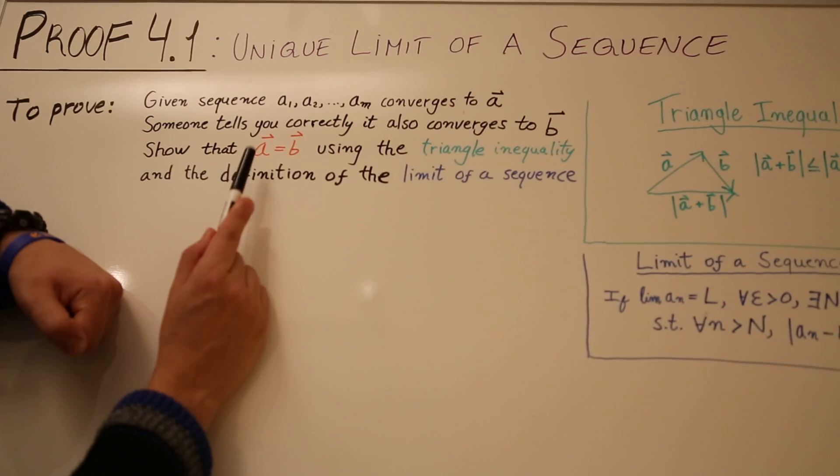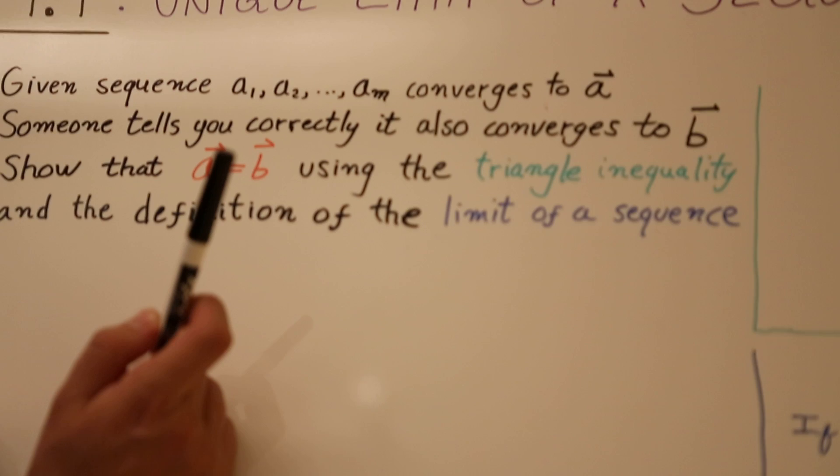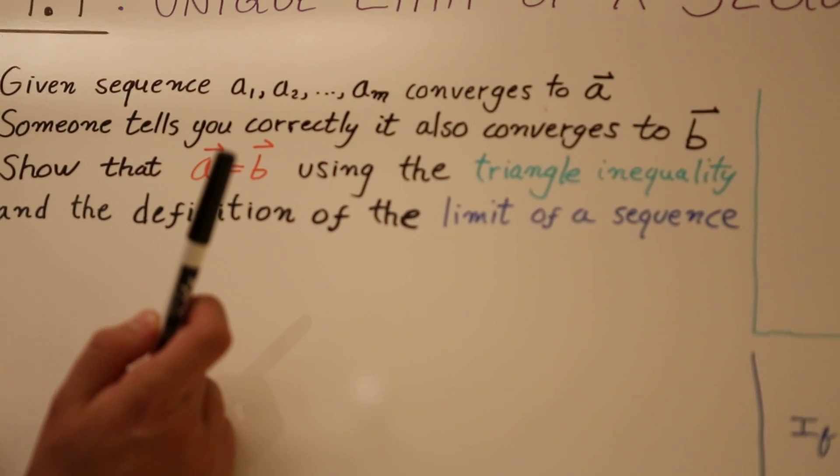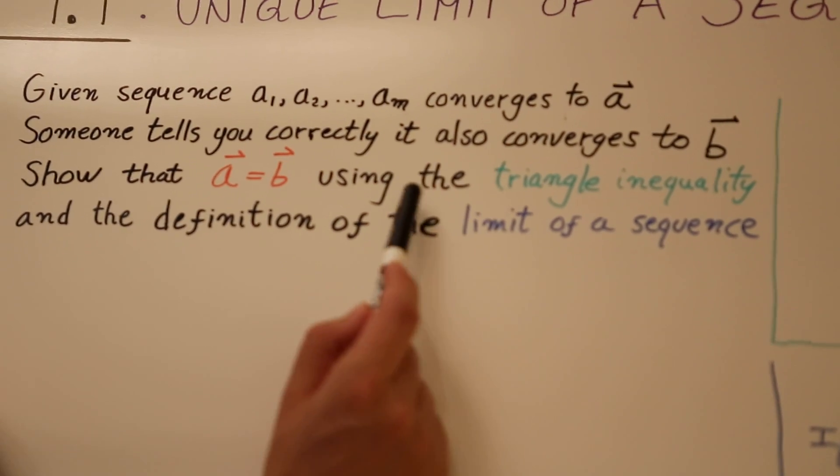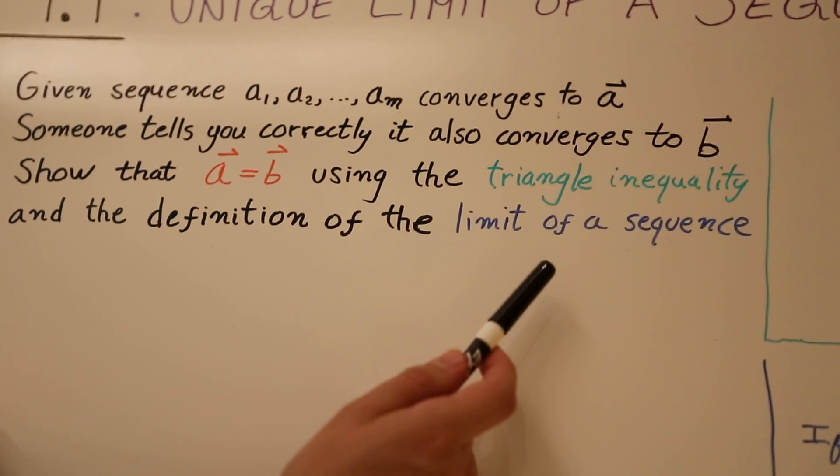Now we have to prove that A is equal to B, since the limit of a sequence is unique. A sequence has, at most, only one limit, using the triangle inequality and the precise definition of the limit of a sequence.